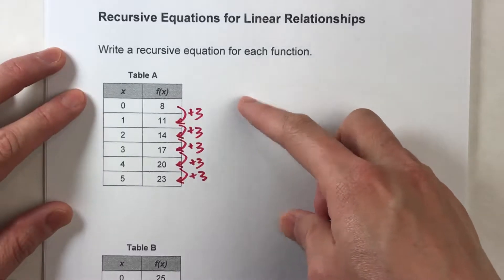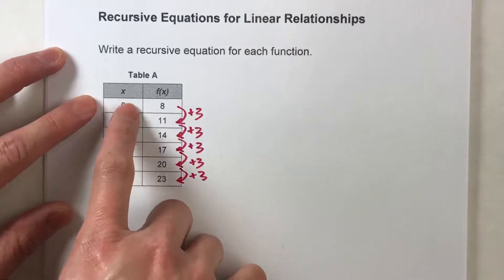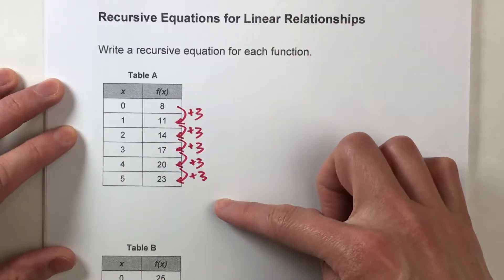So here's the first example I'm going to do, table A. Notice I already wrote out that even though x is increasing by 1, f of x is increasing by 3 each time.